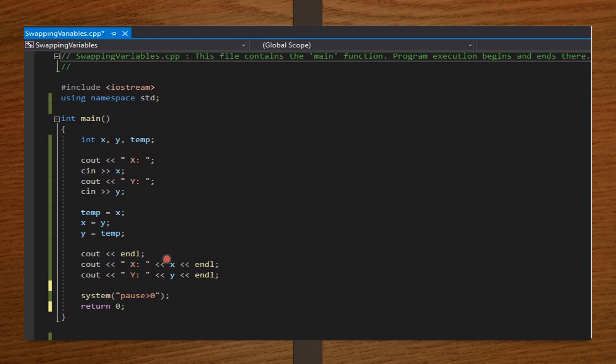Now we say cout endl. That is, we want the computer to move to a fresh line or a new line. Then we say cout x colon in quotation marks, x and then endl. So the computer should display x colon, attach the integer value of x, and then move to the next line. Then on the next line, we should display y colon, attach the y value, and then endl.